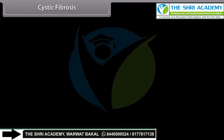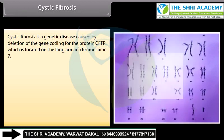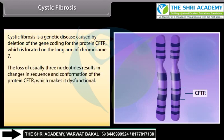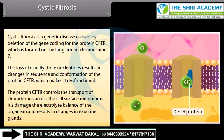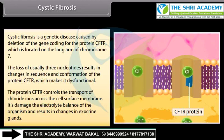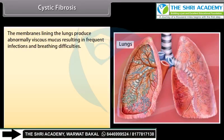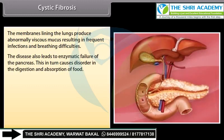Cystic fibrosis is a genetic disease caused by deletion of the gene coding for the protein CFTR, located on the long arm of chromosome 7. The loss of usually three nucleotides results in changes in the sequence and conformation of the CFTR protein, making it dysfunctional. CFTR controls the transport of chloride ions across the cell surface membrane, and its dysfunction damages the electrolyte balance of the organism. The membranes lining the lungs produce abnormally viscous mucus, resulting in frequent infections and breathing difficulties.